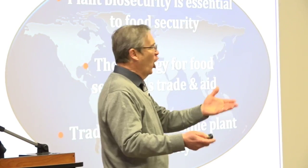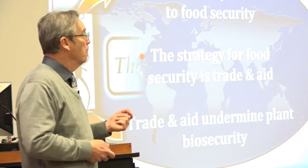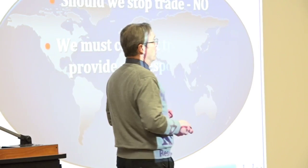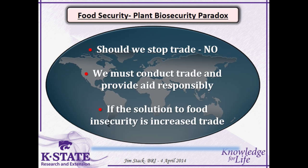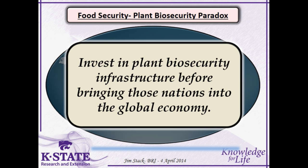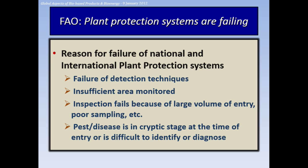If the solution to food insecurity is increased trade, invest in plant biosecurity infrastructure — we're not doing that. We're grabbing underdeveloped nations into the trade market and they don't have the infrastructure to do it safely. FAO did an assessment and all the systems that are in place to protect these countries aren't working. Not only are we sending them organisms they're not prepared to deal with, they're in turn sending them back out.